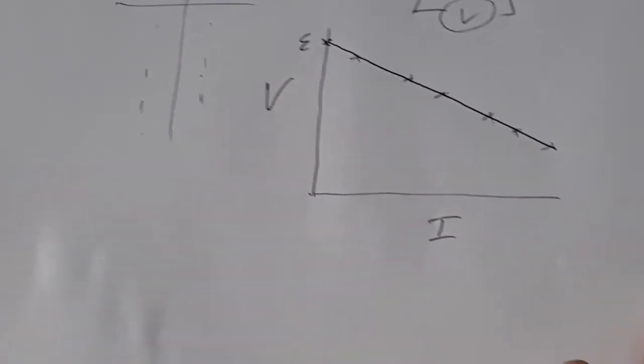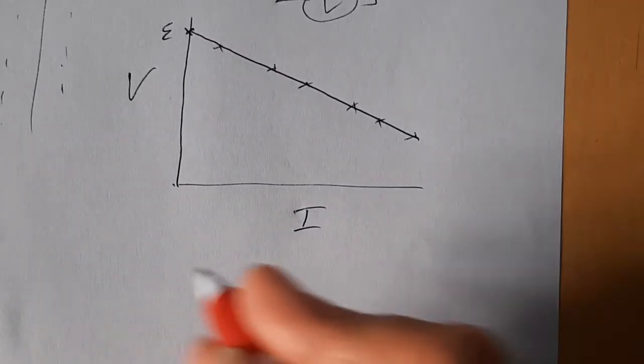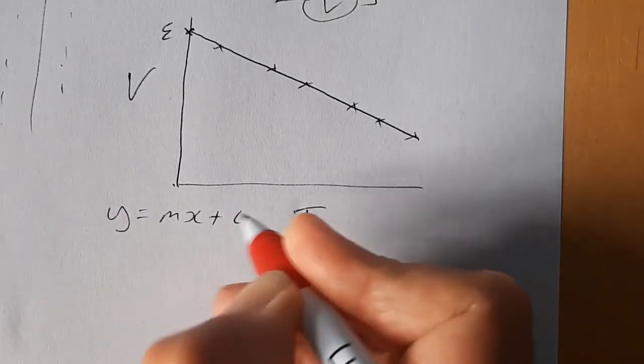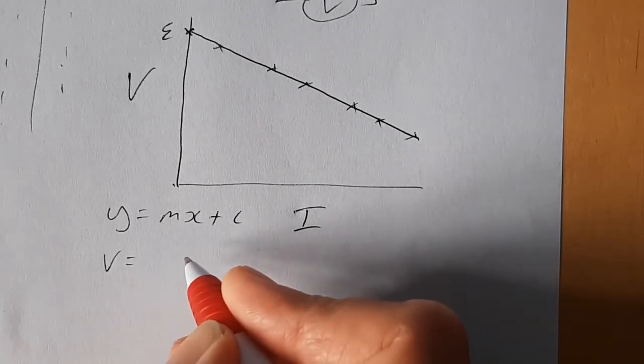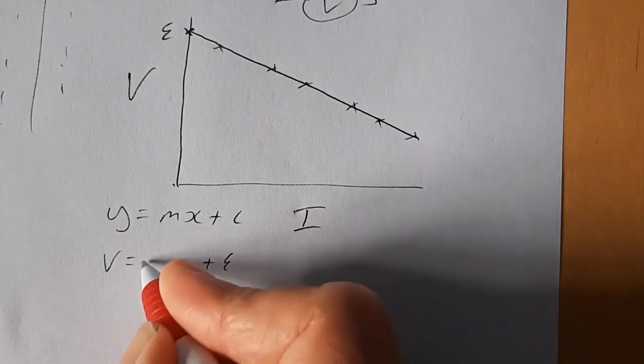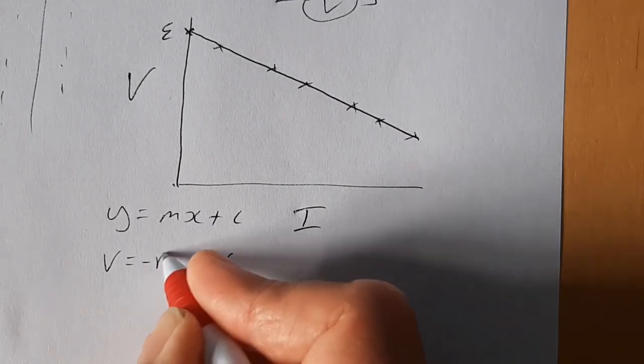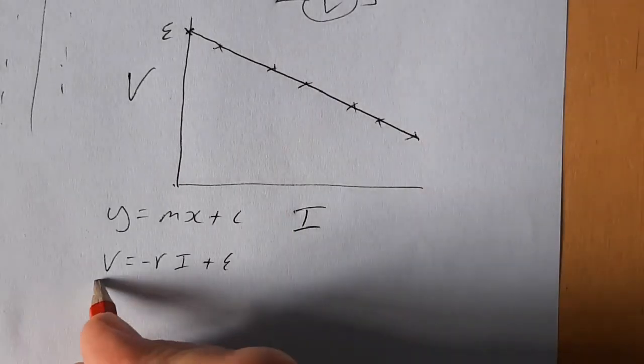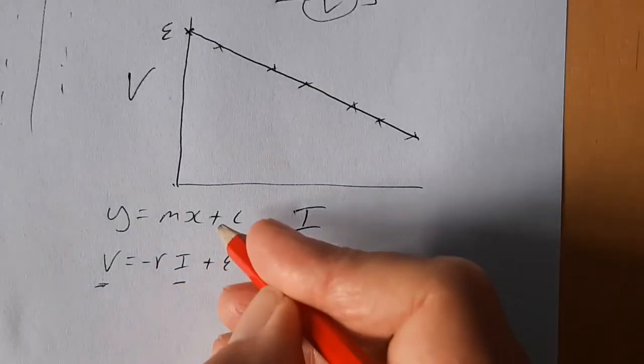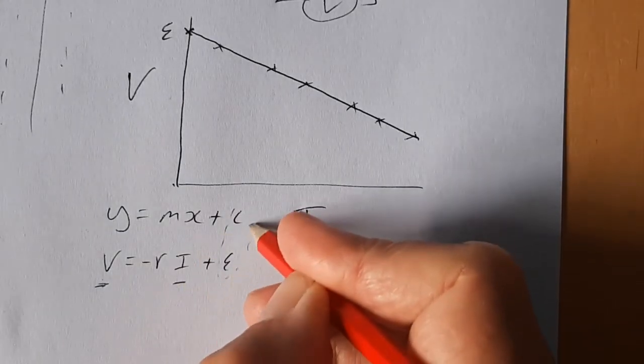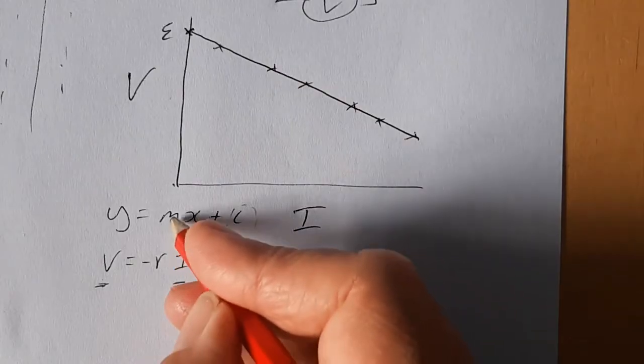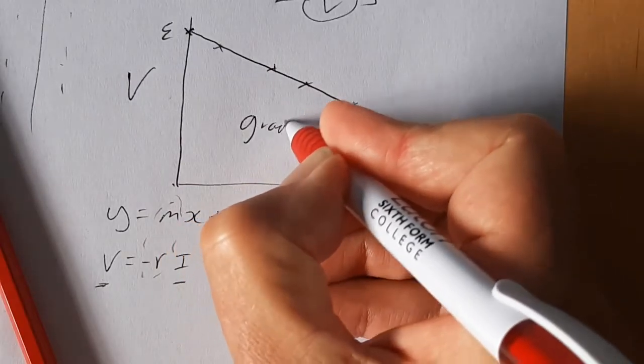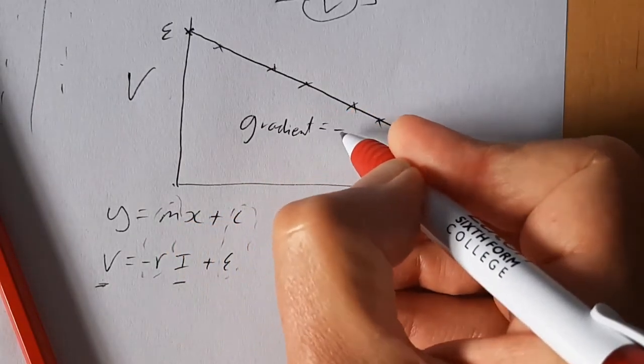So we have to go through this slightly tricky process again of relating the graph to y equals mx plus c. And in the last video I derived this equation. I'm just going to write it in a slightly different order. So hopefully what you can see now is that's our y variable, that's our x variable, that's our intercept. I've already said that that's the EMF. And that makes the gradient equal to minus R.